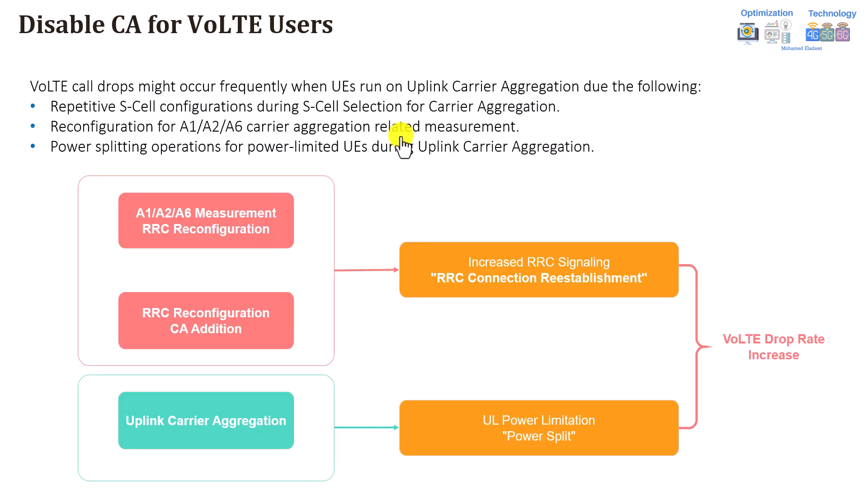The next feature is also very simple. As written from the name, it's called 'Disable Carrier Aggregation for VoLTE users.' For example, if you already have 4G carrier aggregation operating, you can still have VoLTE at the same time — so during a VoLTE call, you can have carrier aggregation. Why is it generally recommended to disable carrier aggregation for VoLTE?